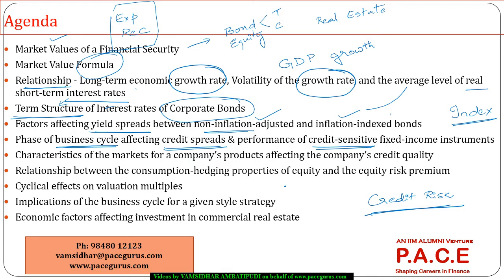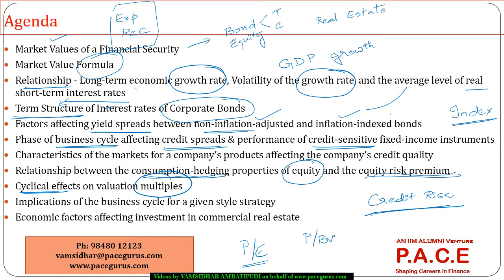From bonds and fixed income instruments, we move on to equity. How does the equity risk premium change during different economic scenarios? What is the consumption hedging property associated with equity — does equity act as a good consumption hedge or not? And how does the business cycle impact valuation multiples like price-to-earnings ratio and price-to-book value ratio — the market-to-fundamentals ratios — and how do they get impacted because of business cycles?